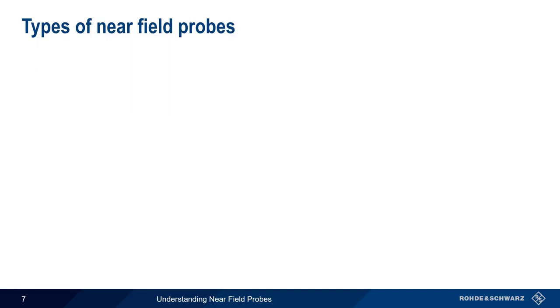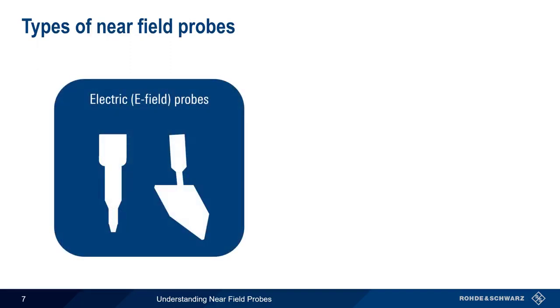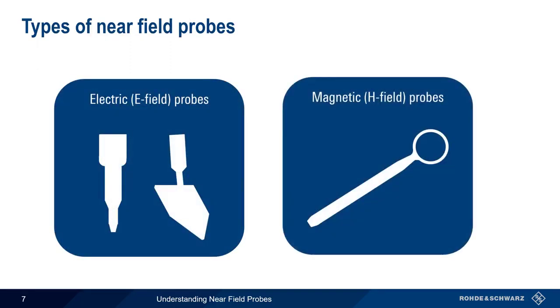Near field probes can be divided into two types, electric or E-field probes, and magnetic or H-field probes. Most near field probe kits will contain both types of probes. These probes are designed to, ideally, respond only to one near field component. Let's start by looking at E-field probes.